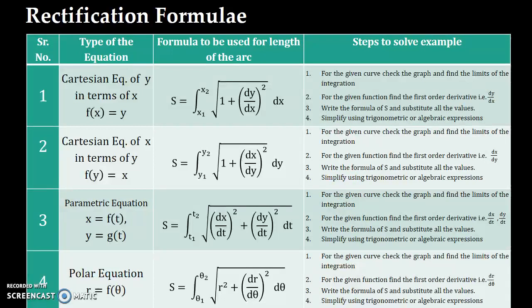Now in the rectification chapter there will be two types of examples: first is single curve example and second is double curve, but in the double curve we have intersection of curves. So let us see how we can solve examples in class.